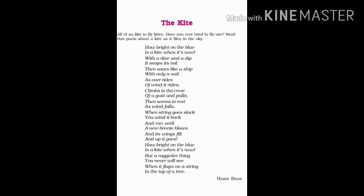'When string goes slack you wind it back and run until a new breeze blows and its wings fill and up it goes.' The poet says that when the thread tied to the kite loosens, the flyer runs and rolls it back, then waits until a new breeze blows so the kite fills its wings with air and flies high once again.